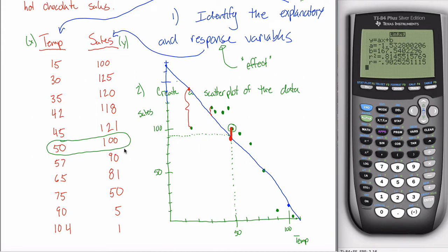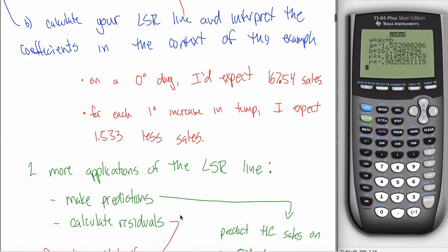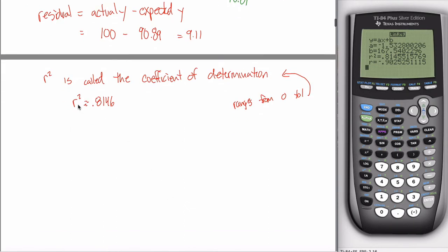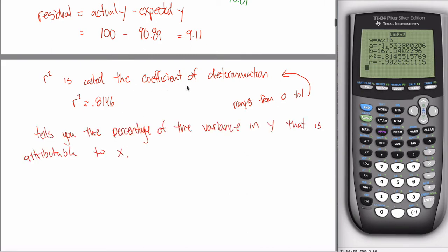Temperature accounts for a lot of the variance in sales. How much? R-squared as a percentage. R-squared is the percentage of the variance in Y that's attributable to X. Your coefficient of determination tells you the percentage of the variance in Y that's attributable to X. In this example, 81% of the variance in sales is attributable to temperature, and 19% is attributable to other causes.